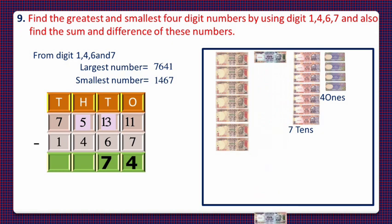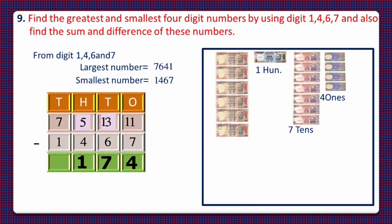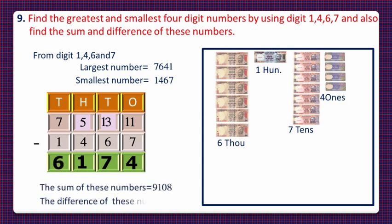Now we'll subtract 4 hundreds from 5 hundreds and are left with 1 hundred, which we write in the hundreds column. On subtracting 1 thousand from 7 thousands we are left with 6 thousands, written in the thousands column. So the difference of these numbers is 6174.